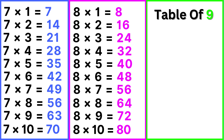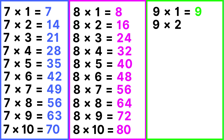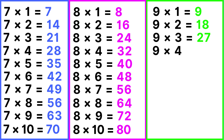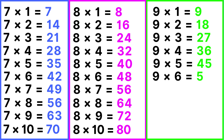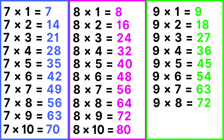Table of 9: 9 ones are 9, 9 twos are 18, 9 threes are 27, 9 fours are 36, 9 fives are 45, 9 sixes are 54, 9 sevens are 63, 9 eights are 72, 9 nines are 81, 9 tens are 90.